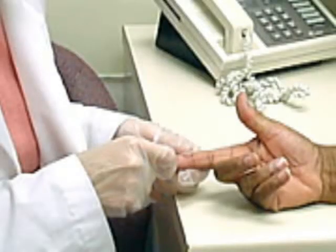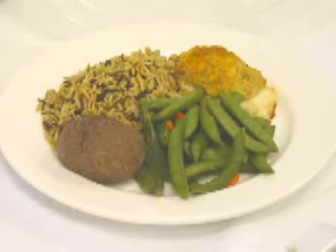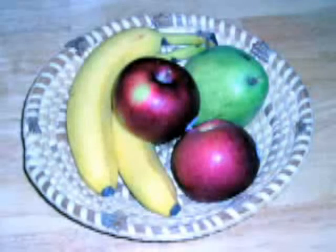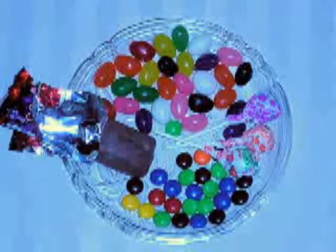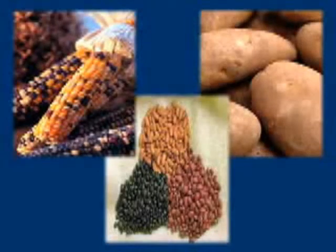Carbohydrate counting is important for people with diabetes. By eating the correct amount of carbohydrates, they will have better control over their blood sugar. No matter the source of carbohydrates, whether it be from breads and grains, fruits and juices, milk or milk products, sweets or starchy vegetables, it is the total amount of carbohydrates that has the greatest impact on blood sugar.